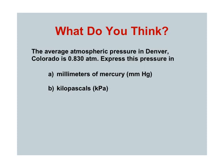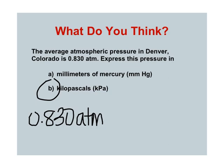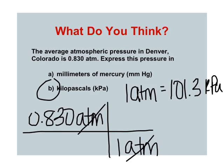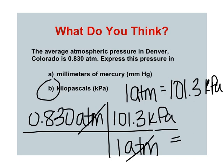Part B: convert 0.830 atmospheres to kilopascals. Remember, 1 atmosphere equals 101.3 kPa. Set up your T-chart so that 101.3 kPa is on top and atmospheres cancel, meaning you'll multiply. When you multiply it out, you should get 84.1 kPa.